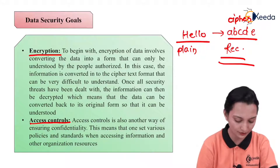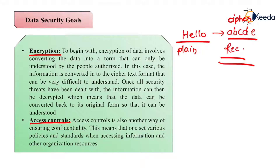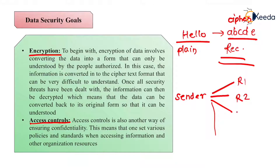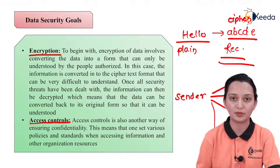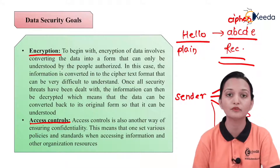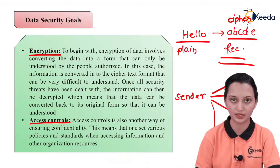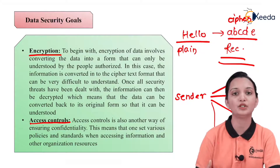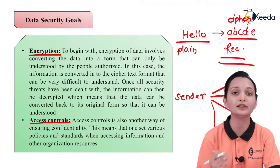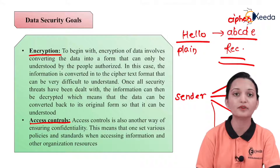Access control means one set of various policies and standards when accessing the information and other organization resources. There can be one sender at one time, but there can be multiple receivers at one time — all may be authorized receivers. This is nothing but broadcasting of the data. Large resource organizations can also be receivers. The number of authorized persons or authorized receivers who are able to decrypt the data is what we call giving access control to a number of users. Providing access control to a particular user means only that user who has access control can decrypt it, thus providing the highest confidentiality to the message.